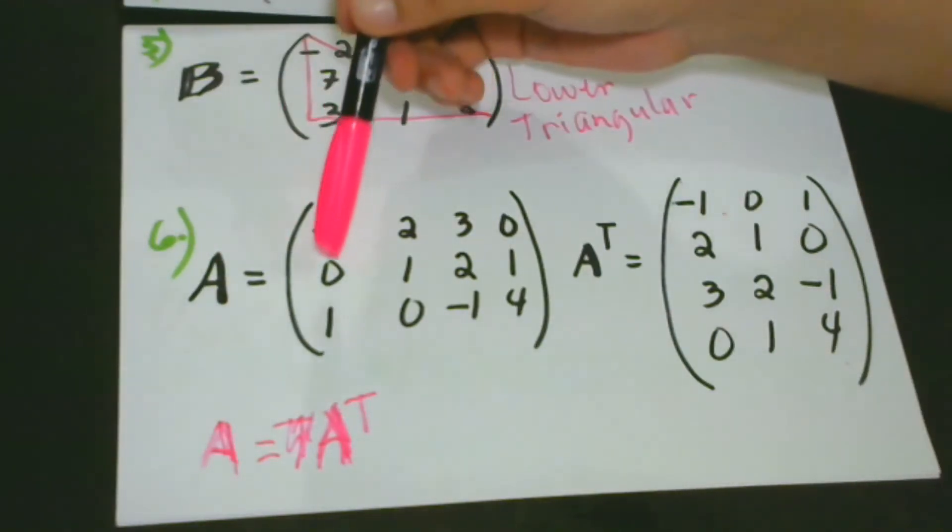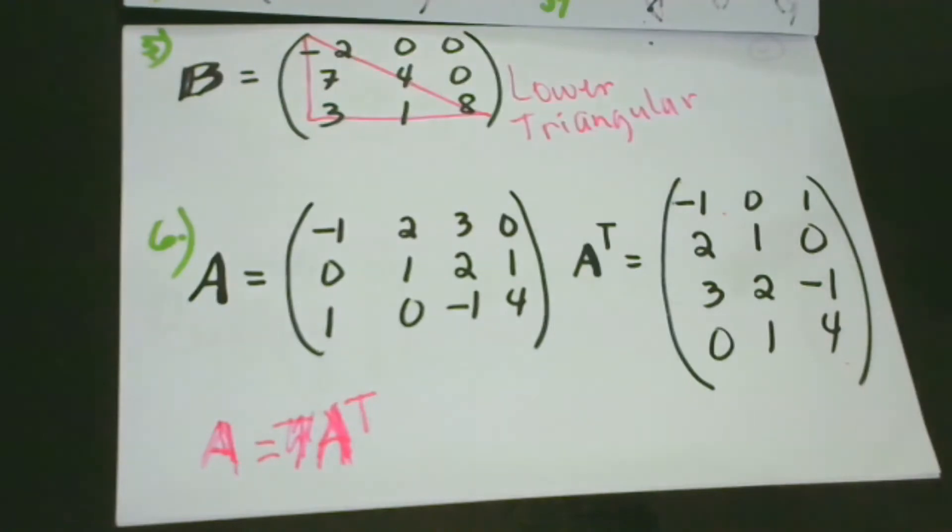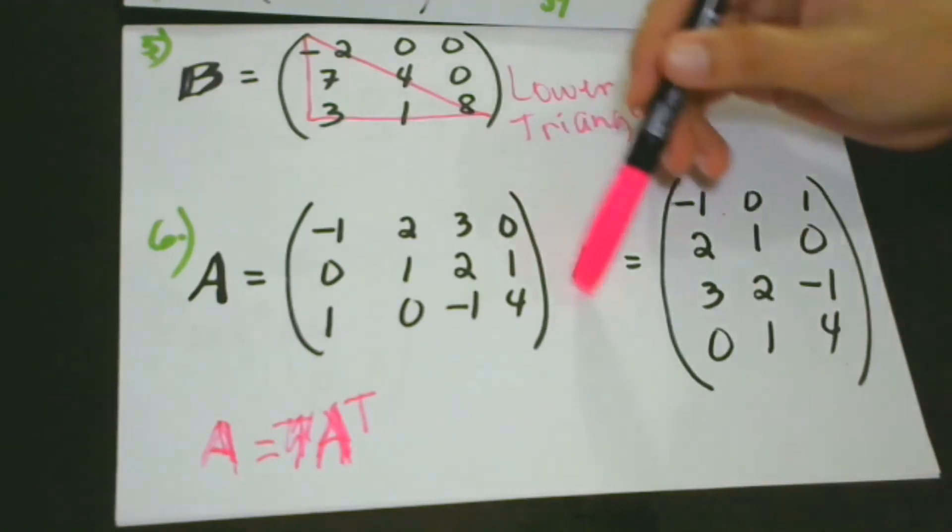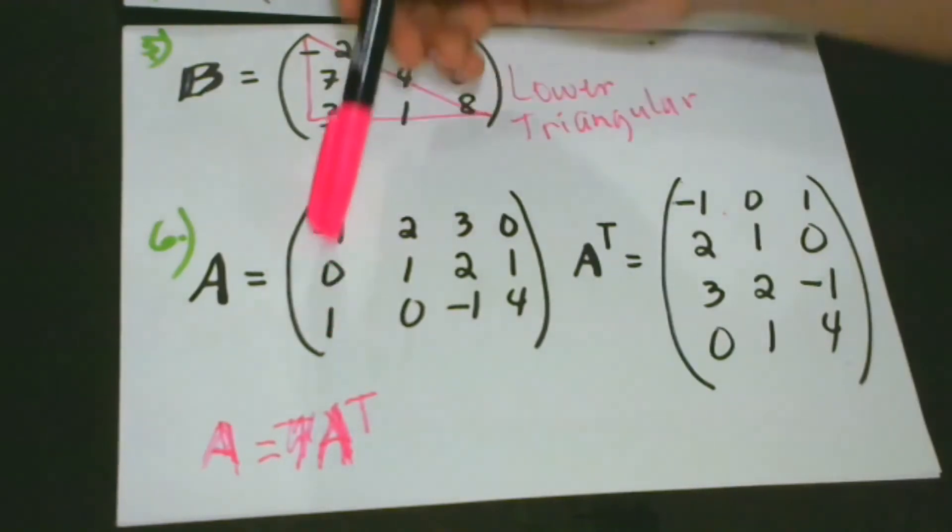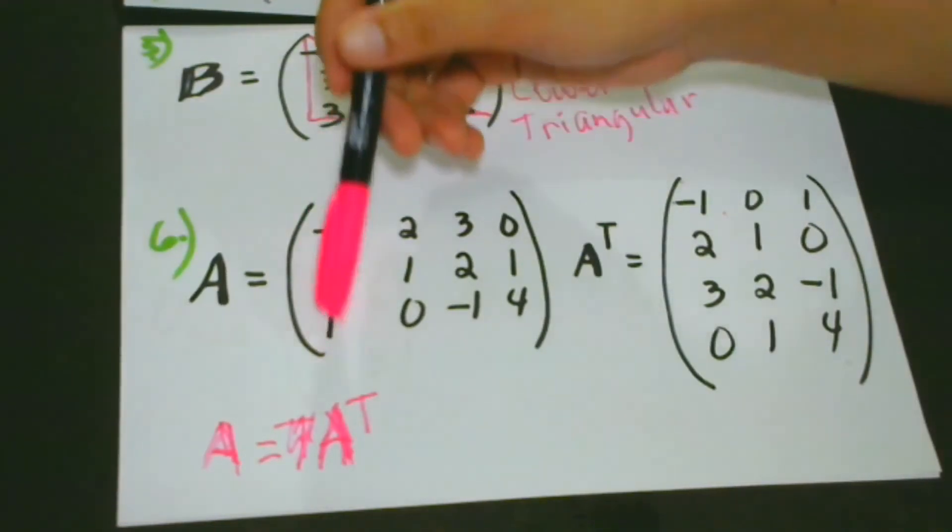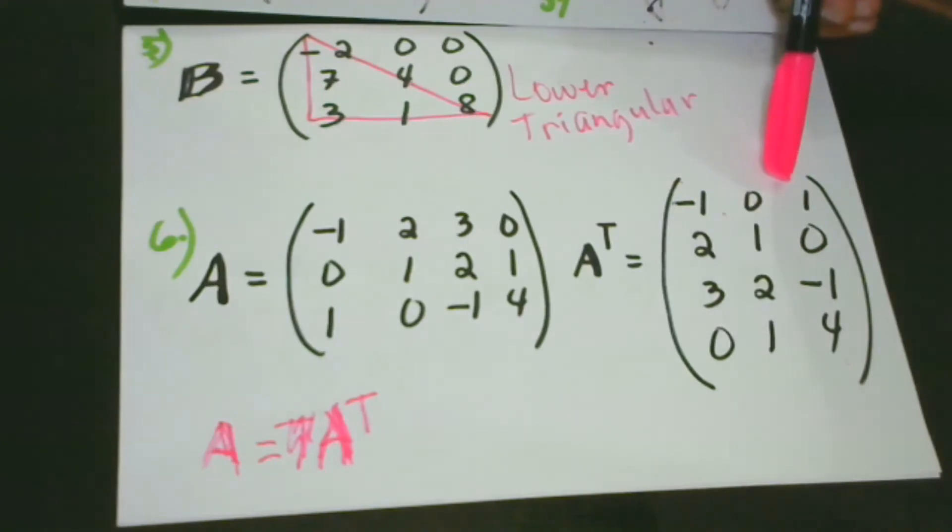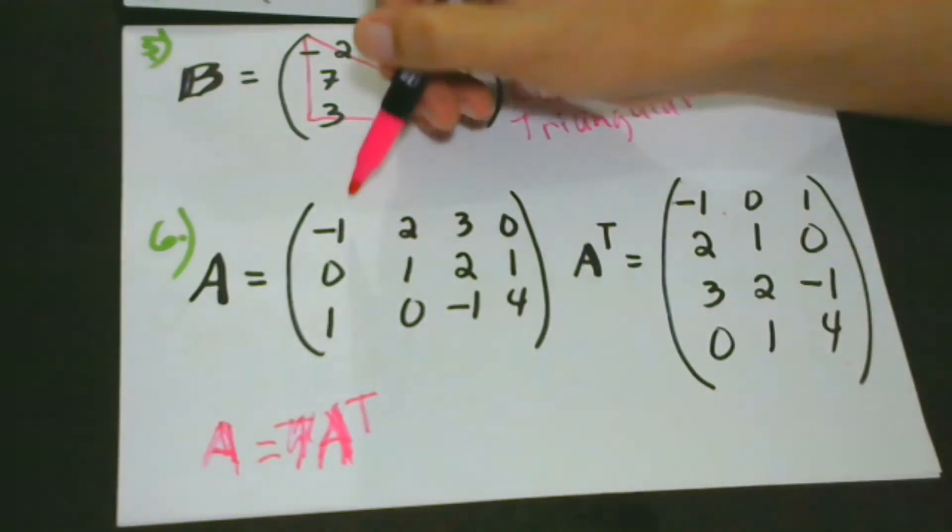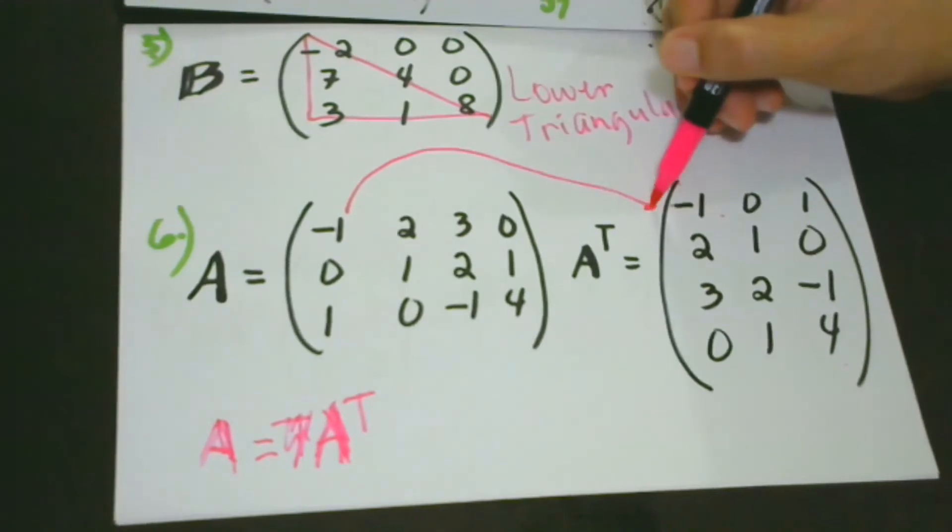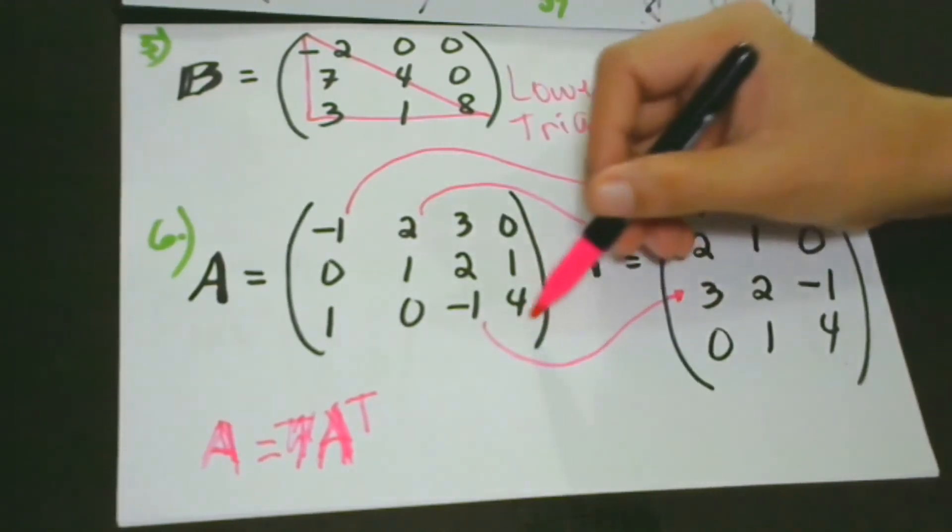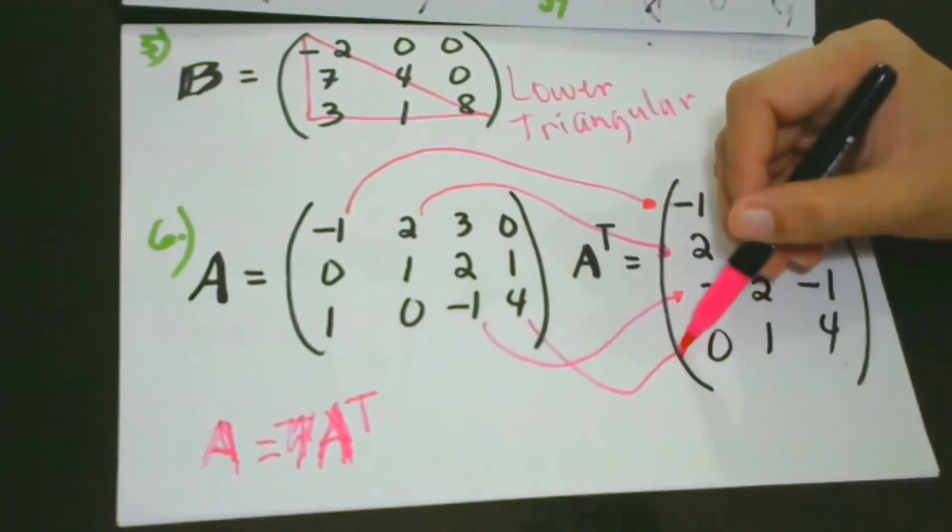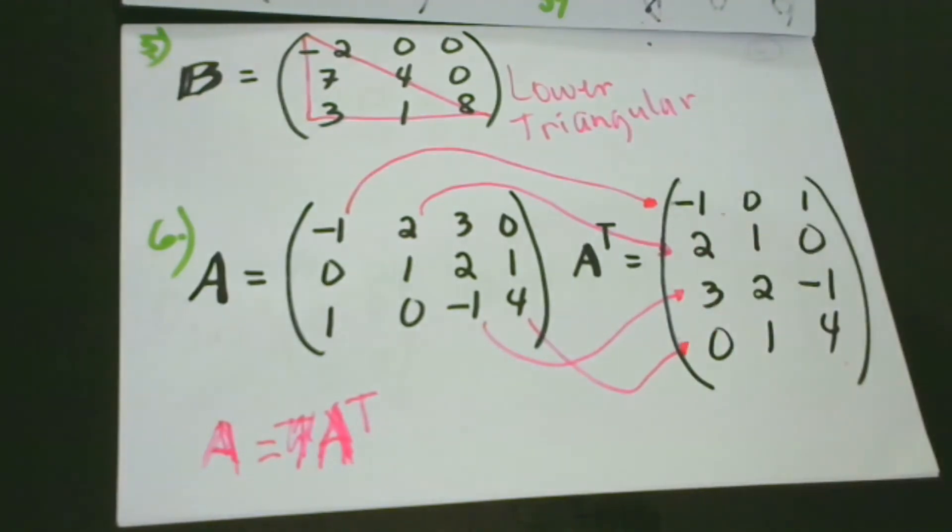This is the transpose of A. What we can see in here is that all the values in the column now become the row, the first row. Here for the first row, for the second row, for the third row, and for the fourth row. That is the transpose.